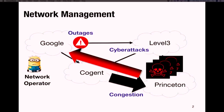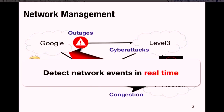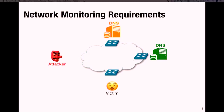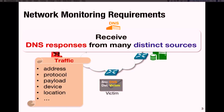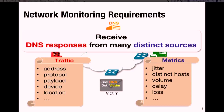To understand the requirements of a network monitoring system, let's consider a simple example. An attacker sends spoofed DNS request messages to open resolvers, and the responses get reflected to victims, overwhelming them as the number of responses increases. If I'm a network operator wanting to figure out if hosts in my network are victims of this attack, I'd like to find out if there are hosts receiving DNS responses from many distinct sources. The operator is trying to extract an aggregate metric from a subset of traffic, and there are many ways to define what subset and what metric. So it is very important that network monitoring systems are as flexible as possible.